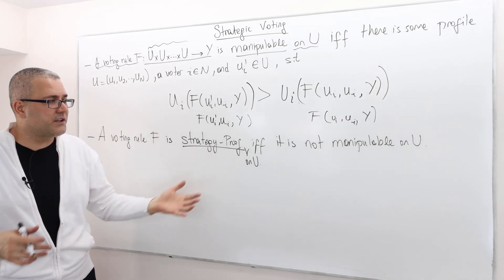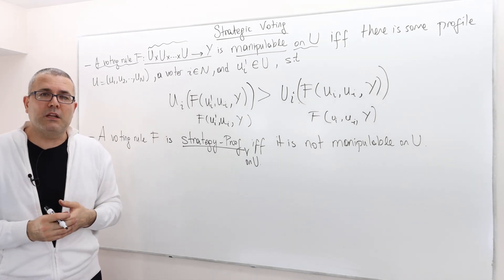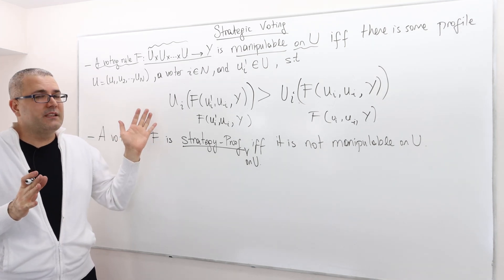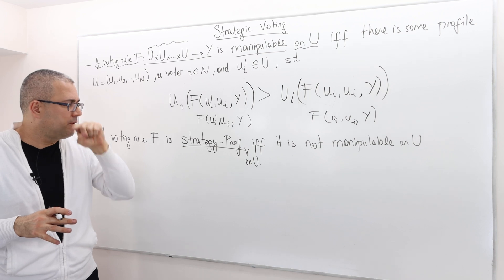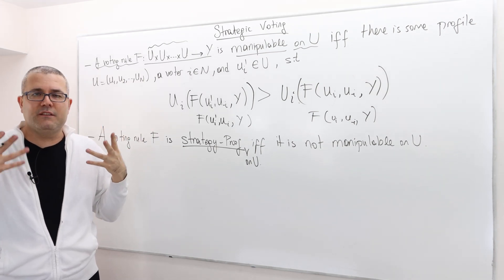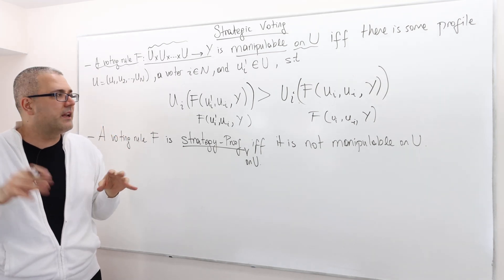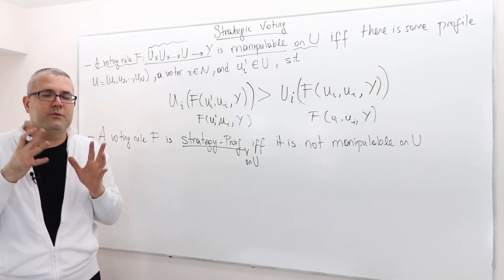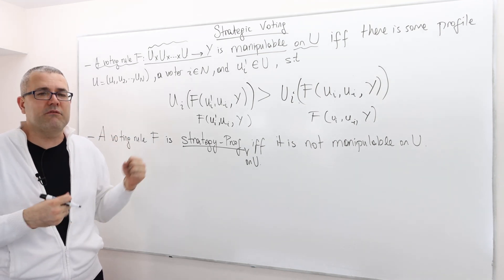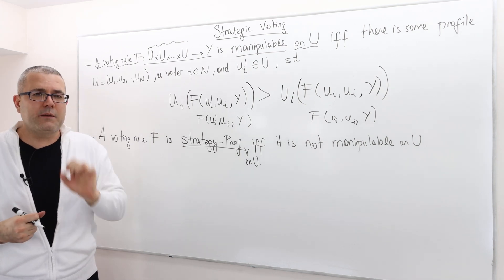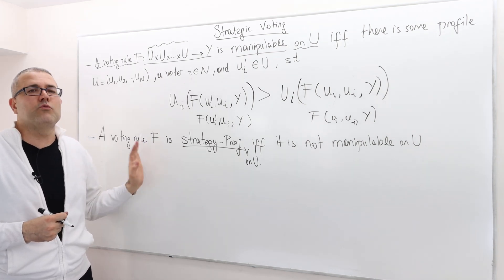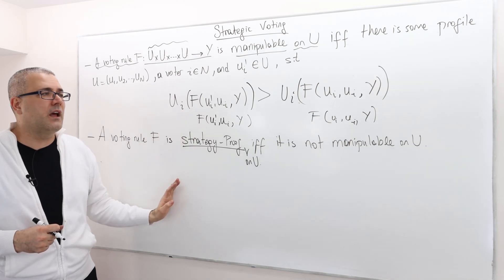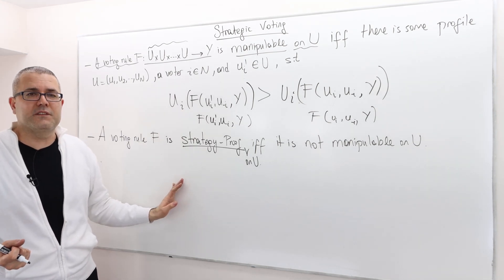Okay. So a voting rule is strategy proof if and only if it is not manipulable. Well, the definitions are probably easy to understand intuitively, but mathematically, it may be a bit more challenging. So give yourself some time to sort of grasp what they really mean. But in the next episode, I'm going to tell you what rules satisfy this nice property and under what domain of preferences. Okay.